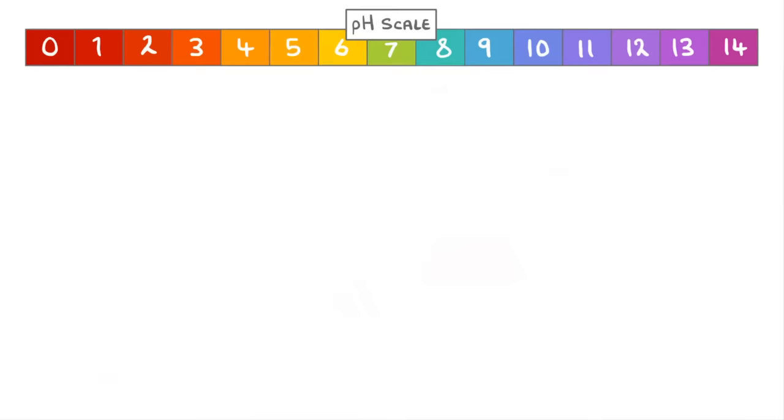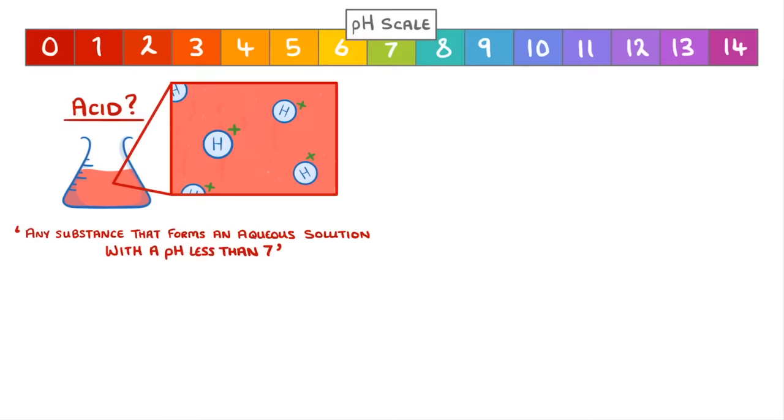The next thing we need to look at is what exactly makes something an acid. You can define an acid as any substance that forms aqueous solutions with a pH of less than 7. And the reason for this is that acids release hydrogen ions in water, which make the solution acidic.